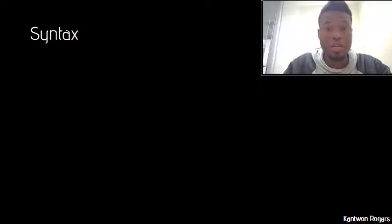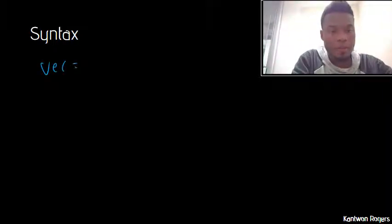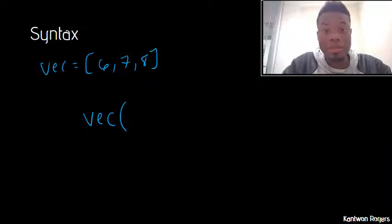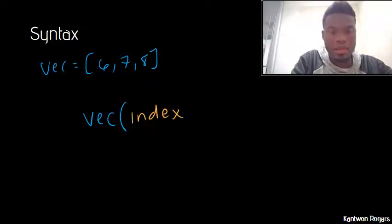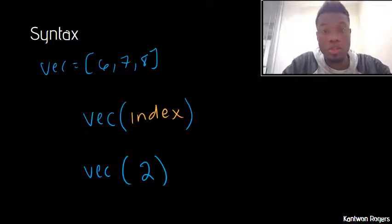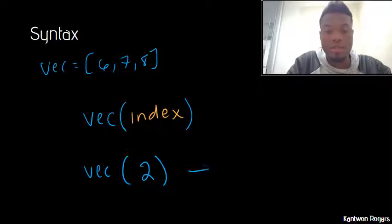The basic syntax for indexing a vector is as follows. The first thing I want to do is tell MATLAB the name of the variable of the vector that I'm indexing. So let's say I had a vector that was six, seven, eight. I give the variable name — in this case, vec — then parentheses. Inside those parentheses, I tell MATLAB the index that I want to access. So if I wanted to access the seven, I could say vec(2). This is indexing or accessing the second element inside of my vector, which is seven.